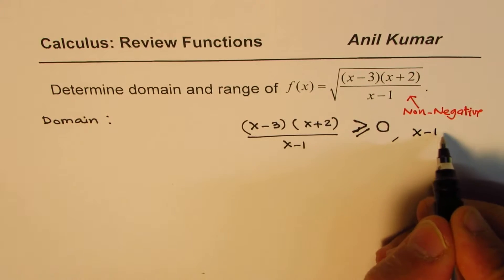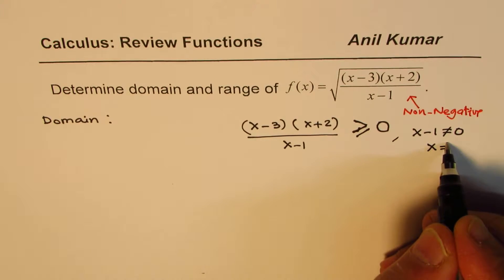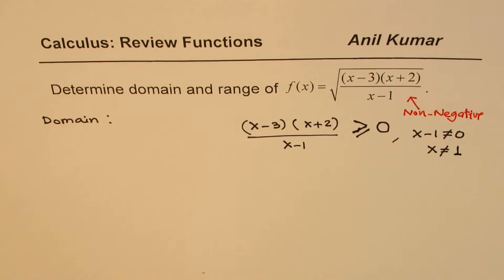Now from x minus 1 not equal to 0, we do get x is not equal to 1. Now, how about this part? How do we solve this? That is what we need to think about.